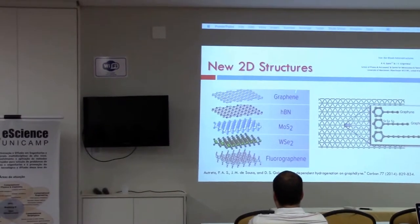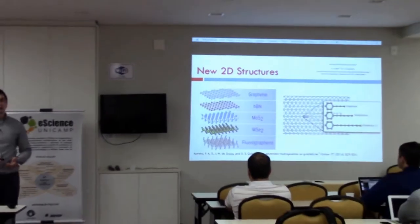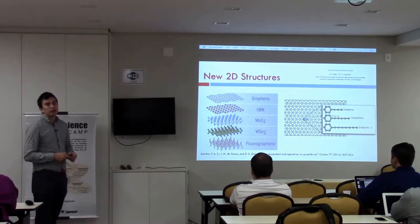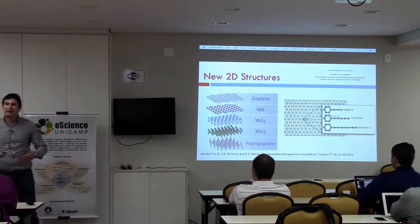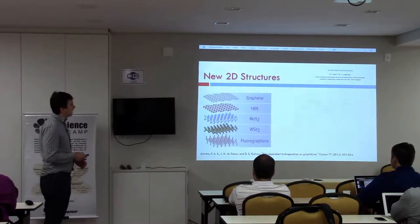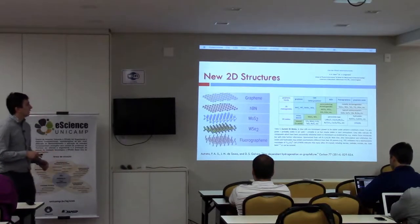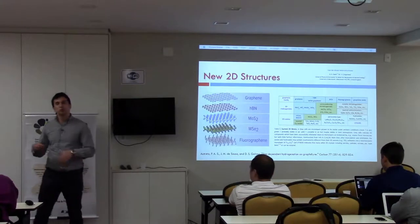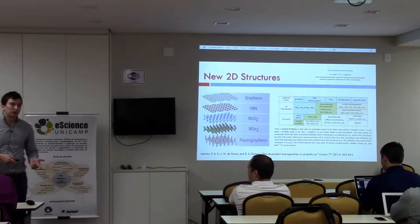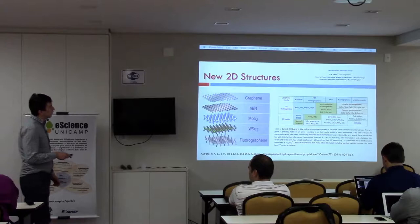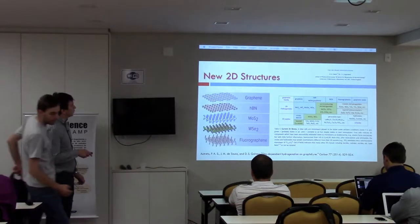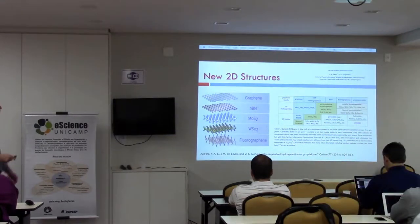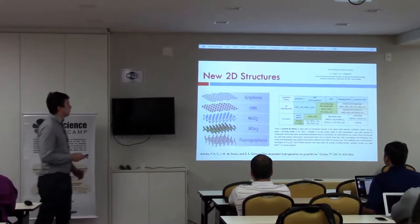Like graphene, we have hexagonal boron nitride, molybdenum disulfide, and many others. Each one has specific properties. So graphene is a good thermal conductor, but BN is not. You can mix these 2D structures to build new specific materials for many purposes.